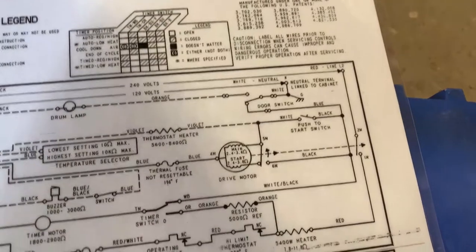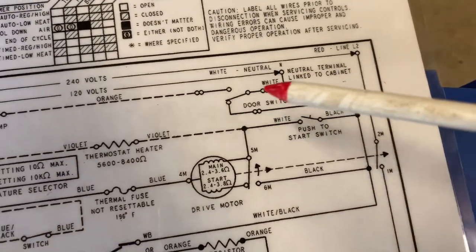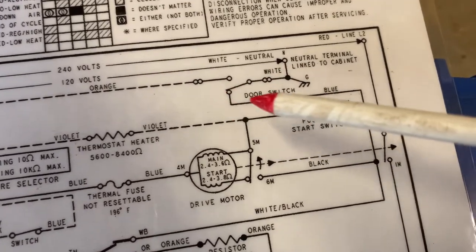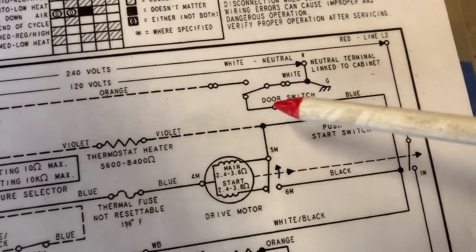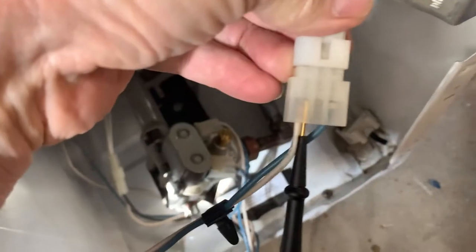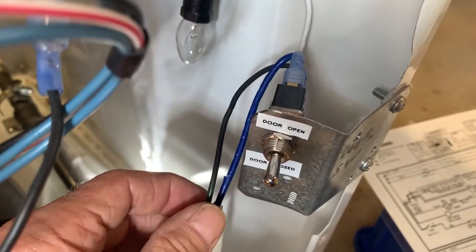So the next step is if the door is closed, which it shows in this drawing, the switch is closed. The power is going to come—not power, excuse me—neutral is going to come out through this blue wire. So now I've got one of my leads in white, and the door switch is in the open position right now.